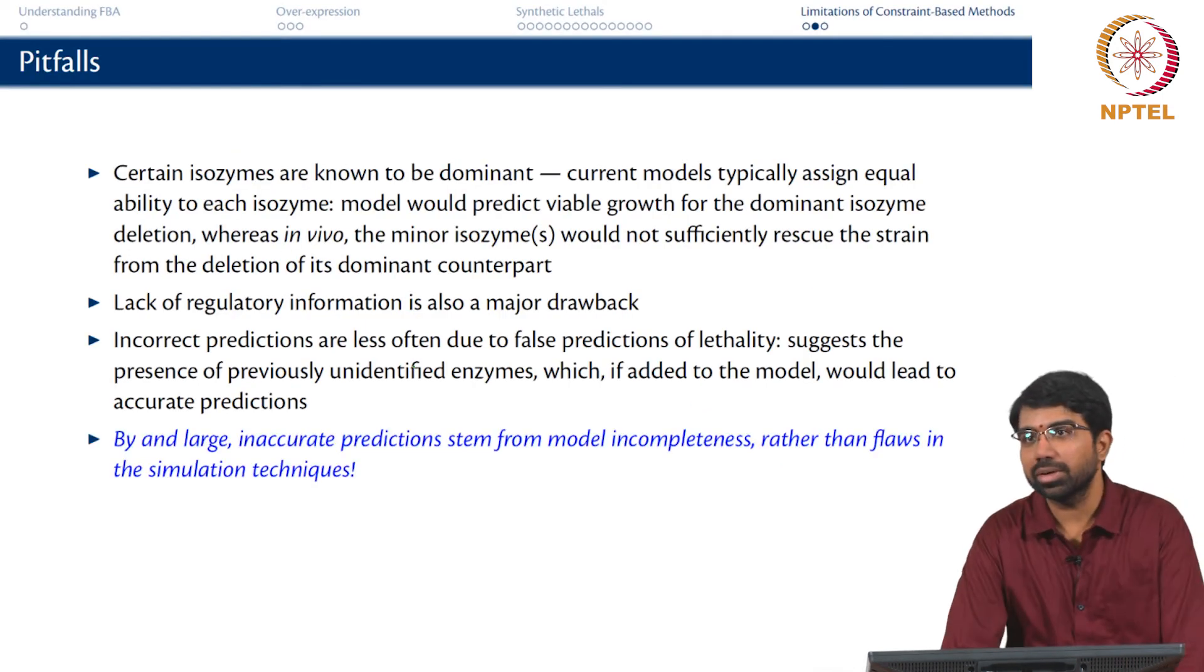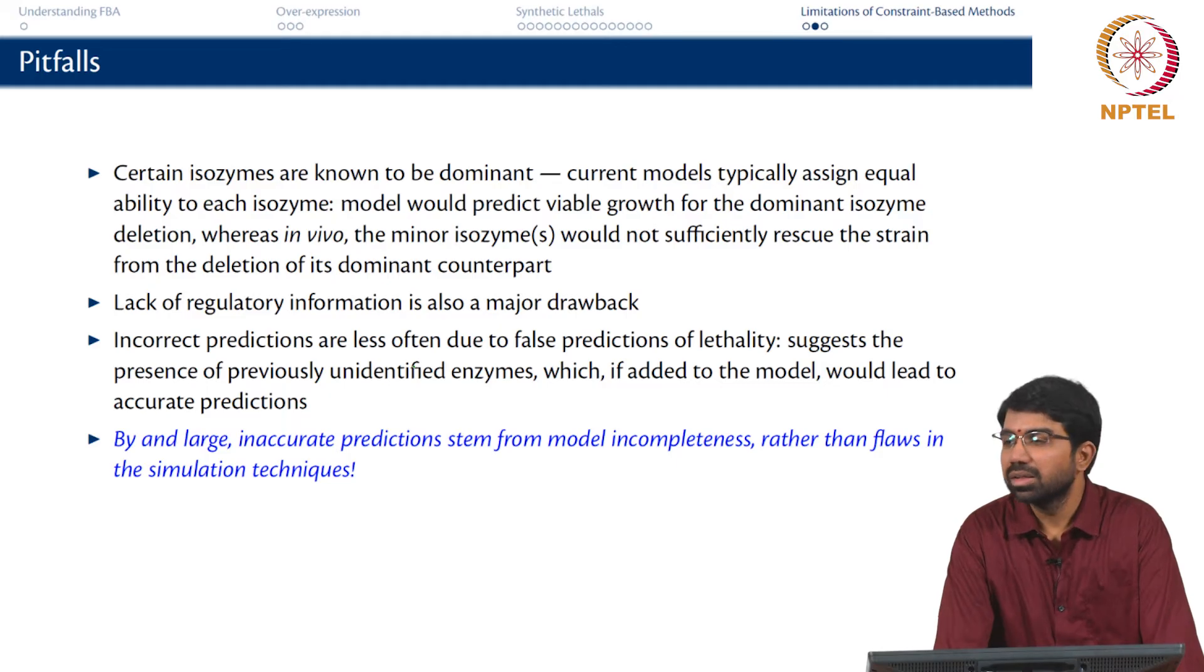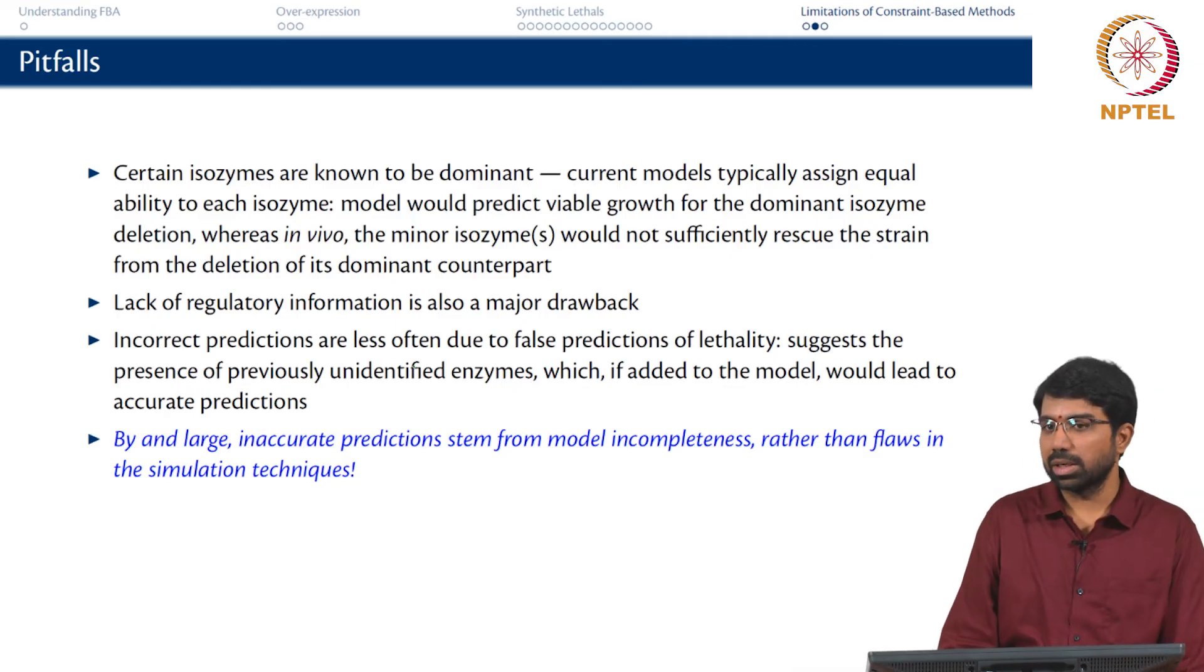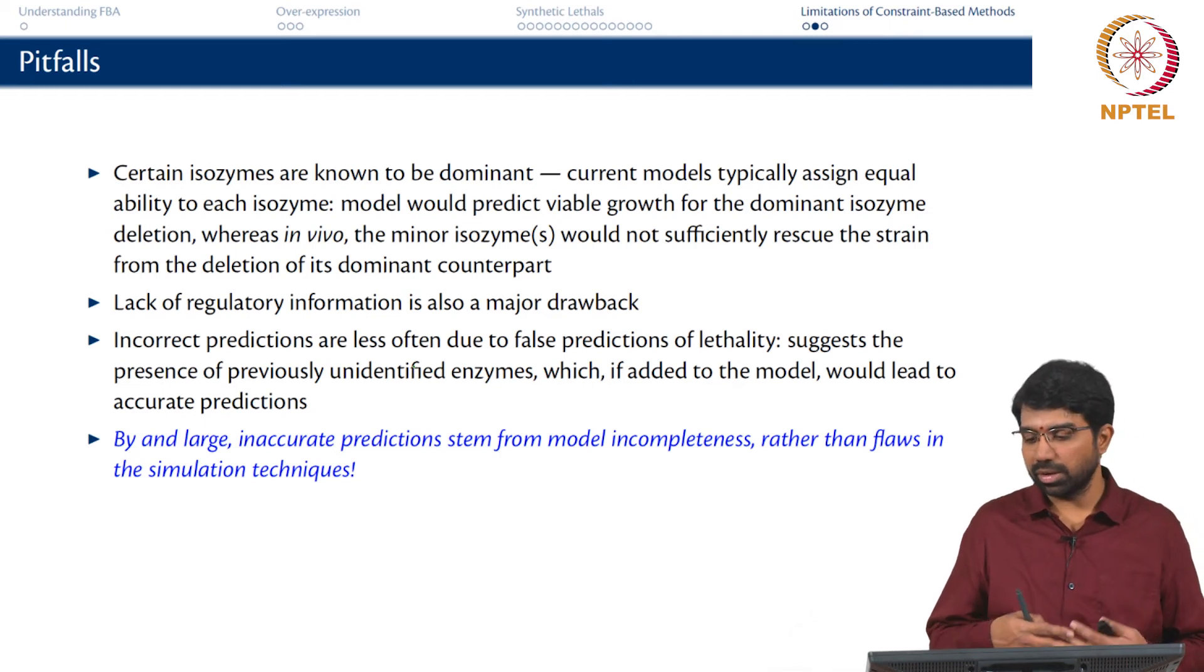By and large, the important thing to note is that the inaccuracies stem from problems with the model, not the simulation or the modelling approach itself. FBA as such is very reasonable except for the fact that it ignores regulation or in some sense ignores non-metabolic activities of the cell. Although some of it is somewhat accounted for by the ATP maintenance flux. But the flux balance constraint-based modelling method by itself is not very flawed. There are very good agreements with what you find in literature.